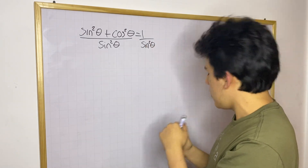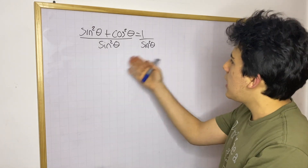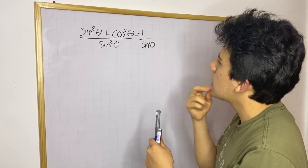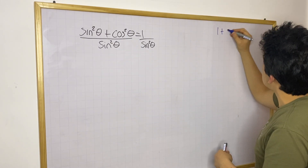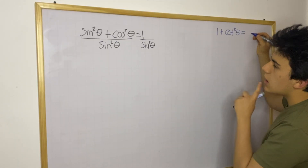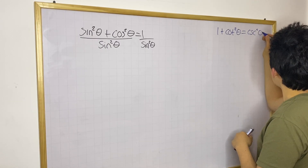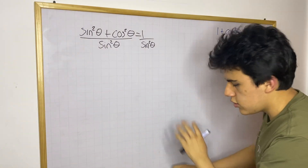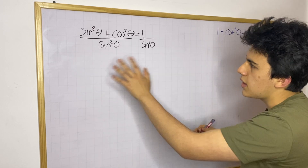Now, I want to show you what equation we're going to arrive at by doing this. The equation we're targeting is: one plus cotangent squared theta is equal to cosecant squared theta. This is the equation that we're deriving right now, just so you have a bit of context about what we're doing here. Let's continue.